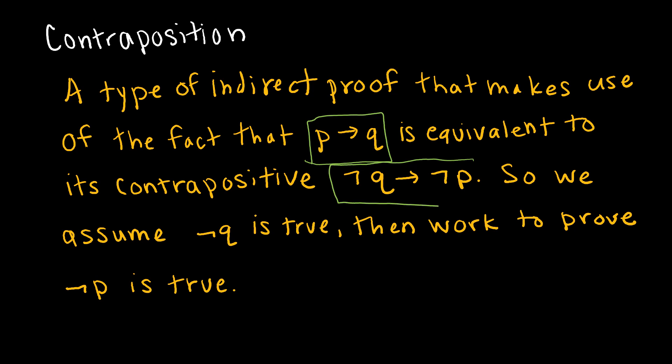Which is if not Q, then not P. So in a direct proof, we assumed that P was true and proved that therefore Q was true. In this contraposition proof, we're going to assume not Q, and we're going to prove not P is true, therefore by contraposition, proving that if P then Q is also true.